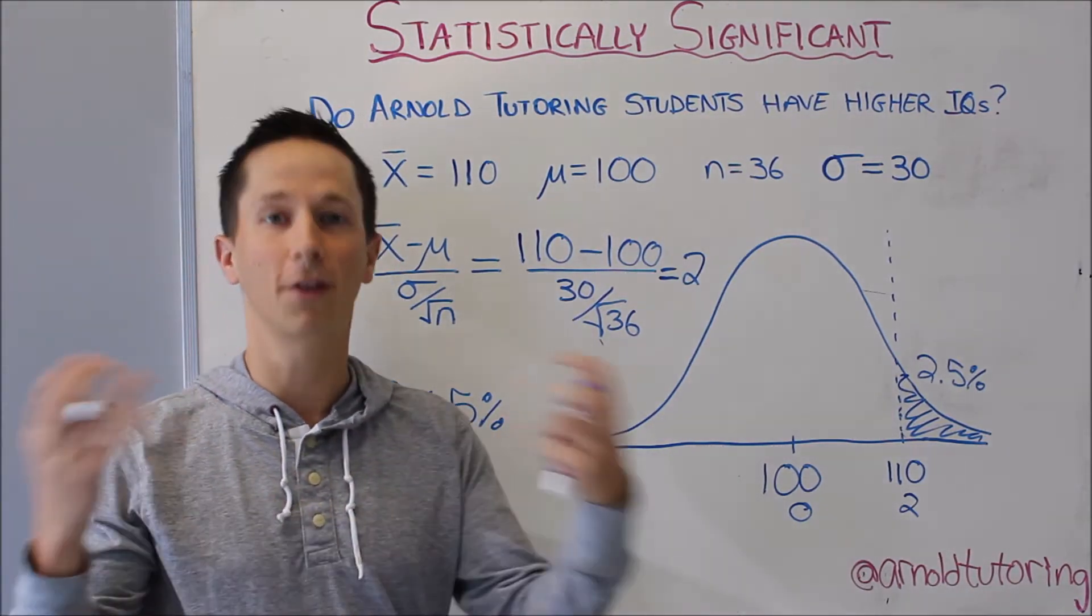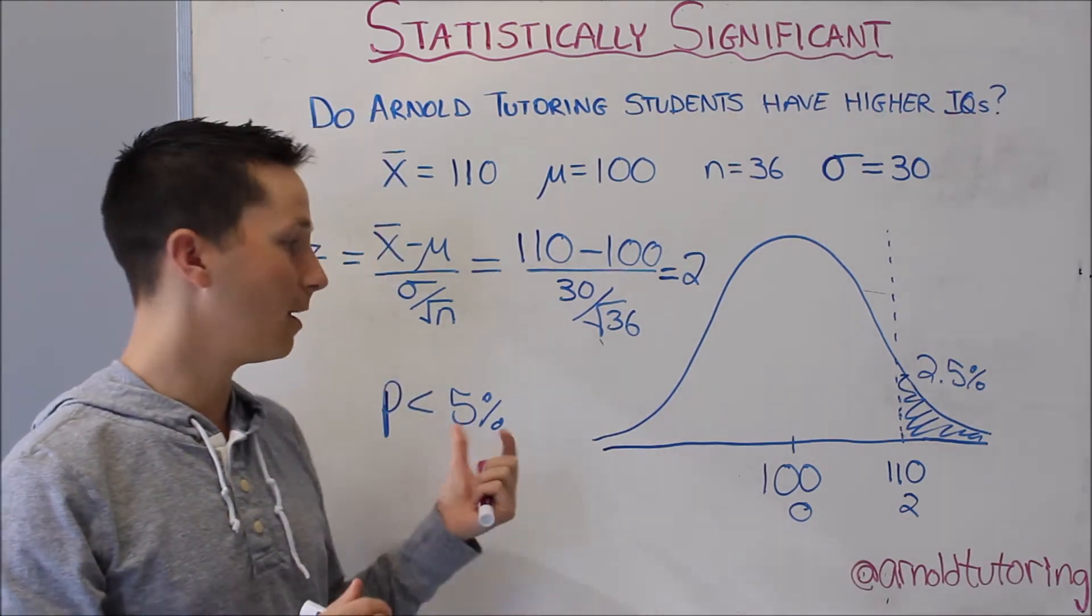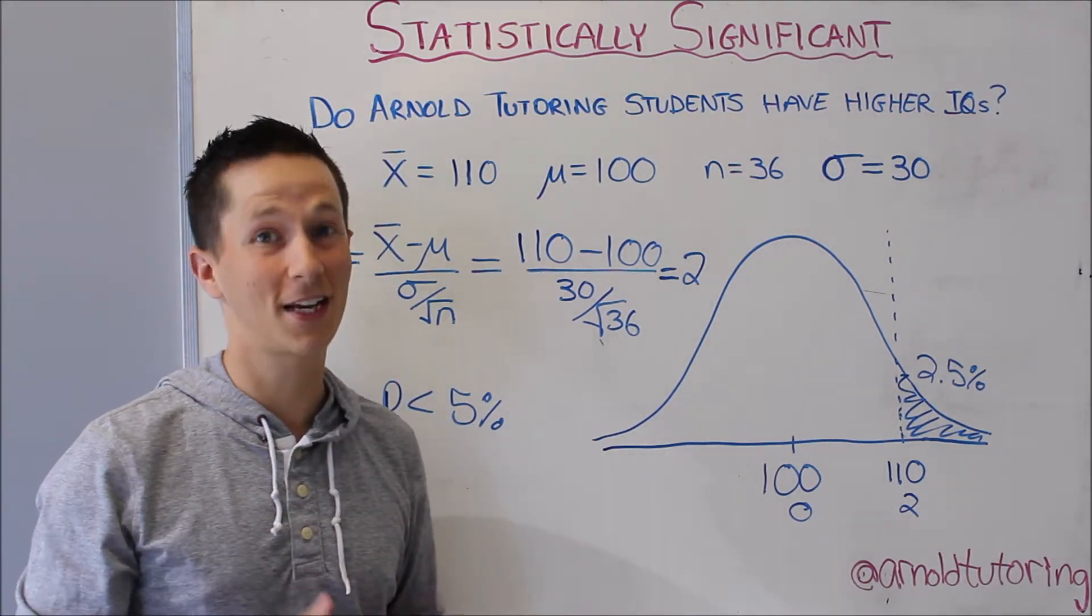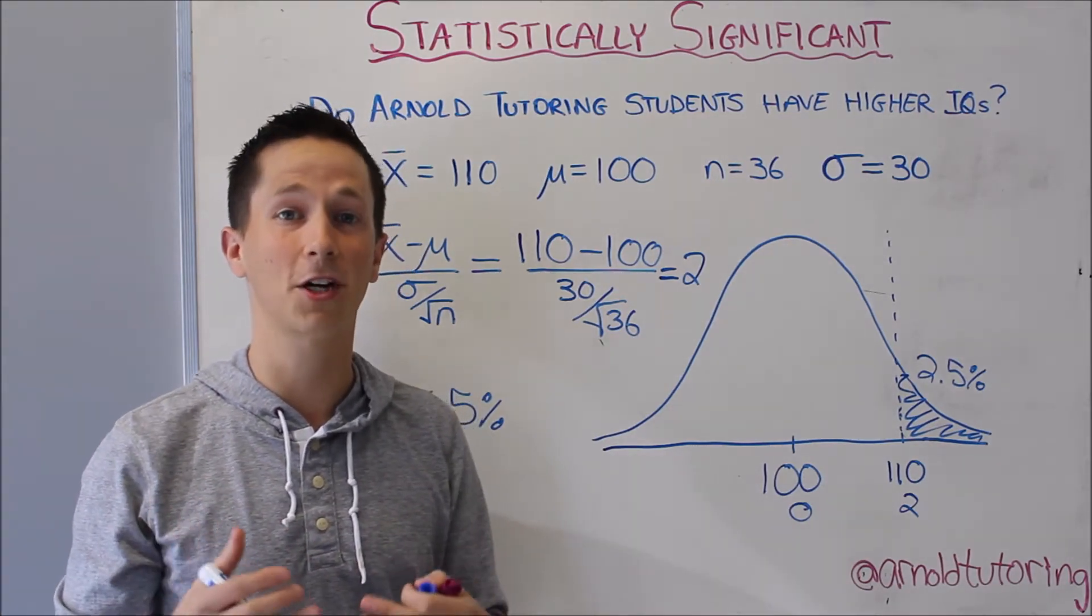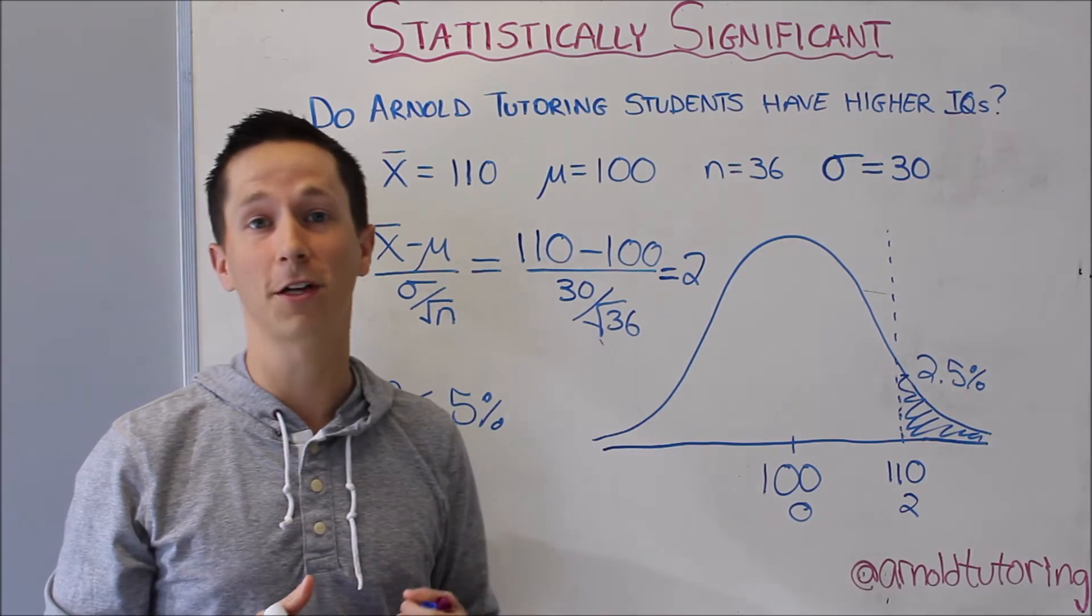At a significance level of 5 percent, which is sort of the norm, if we're less than 5 percent we're saying that's pretty significant, that we're way out there. It's unlikely that that's just up to chance, and there probably is some relationship between the fact that these kids are Arnold tutoring students and they have higher IQs.